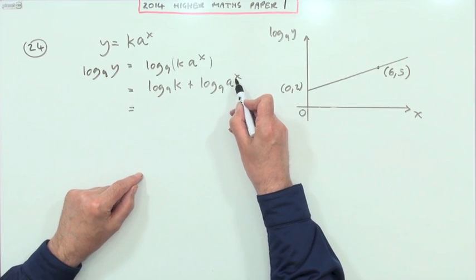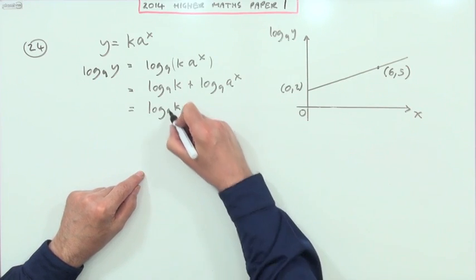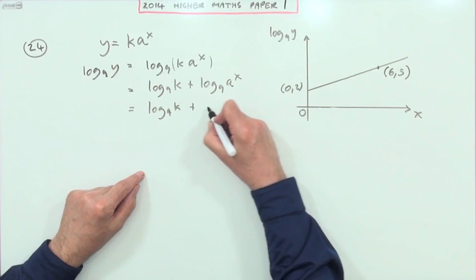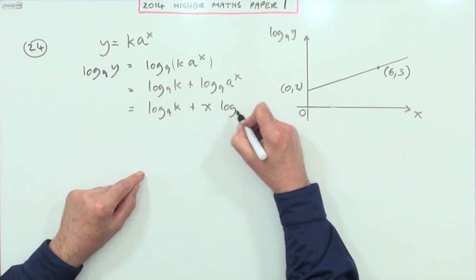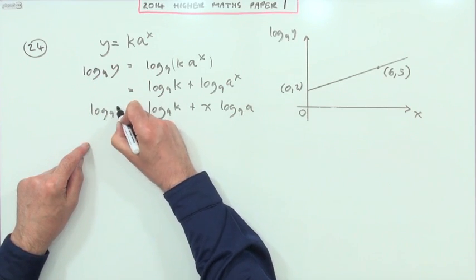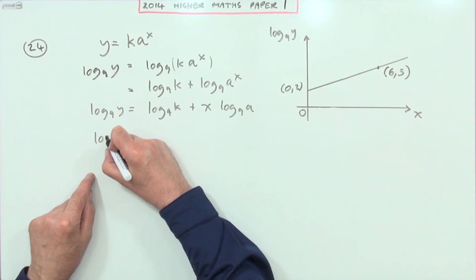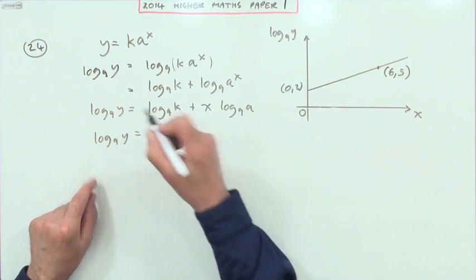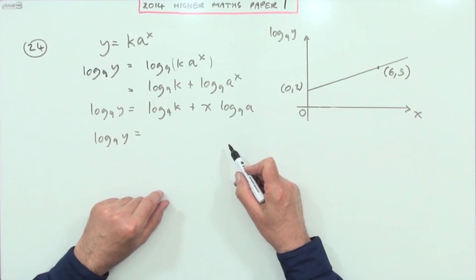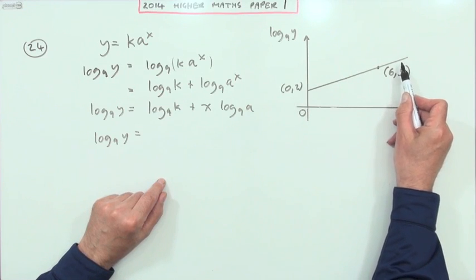That power can pop out of the logarithm. I've got log base 9 of k plus x times log base 9 of a. I'll just rearrange that slightly. Log base 9 of y, which I should have done first of all I suppose, just to make it look more like this line here.